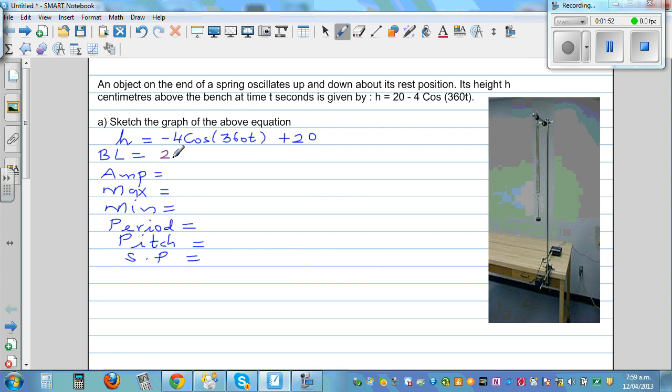So baseline is 20. Your amplitude is not negative 4, it is 4. So maximum is baseline plus amplitude, which is 24. And your minimum is always baseline minus amplitude, which is 16. Your period is 360 divided by the coefficient of x. This is 360 divided by 360, that is 1 second. So you can say 1 oscillation is completed in 1 second. So pitch would be 1 quarter of a second or you can say 0.25 seconds. And your starting point is 0.